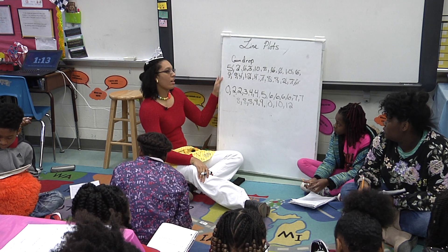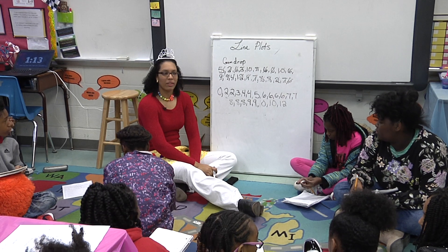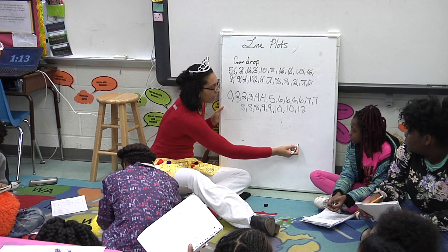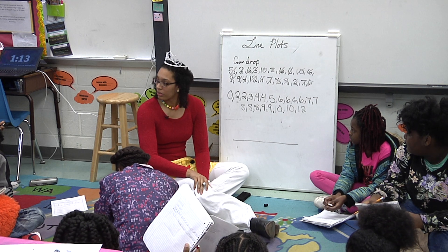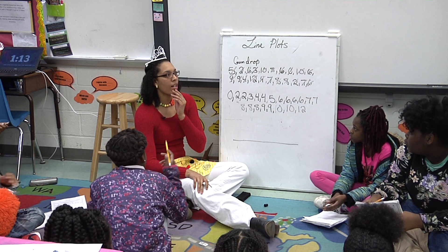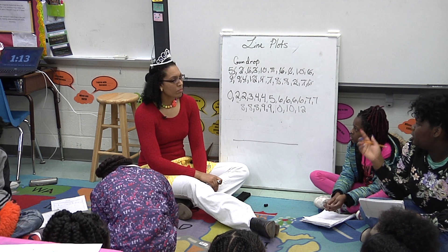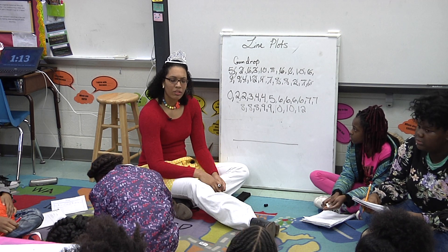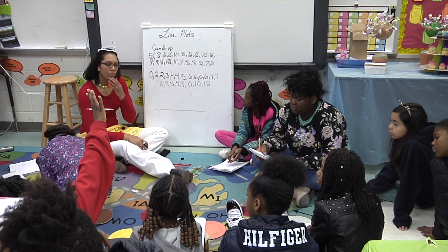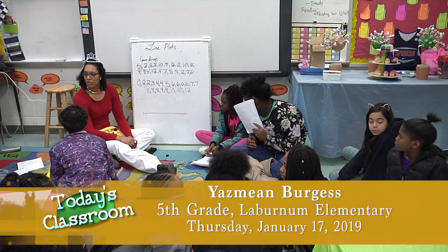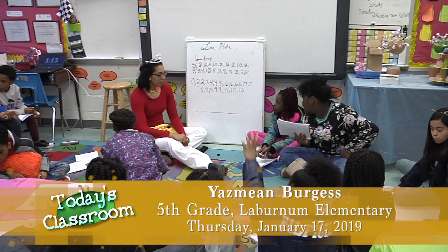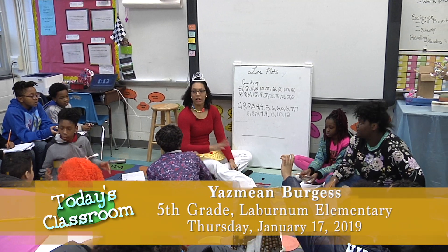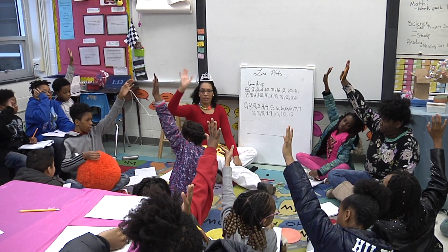Now we're going to go on to constructing a line plot, because looking at all these numbers, it's a lot, isn't it? So when we construct a line plot — and we talked about this a little before — we're going to make our line and then we're going to make a number line. Should we start our number line at twenty? No. Why not? Because some numbers are lower than twenty. Should we start at five and go up by five? No — if you start at five, some of the numbers might not be in the line. Whisper to your partner: what number do you think we should start with? Zero. Raise your hand high if you believe it's zero. All right, I'm going to go with zero.